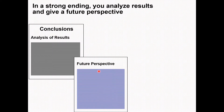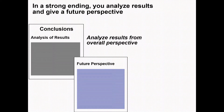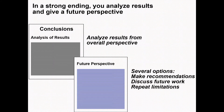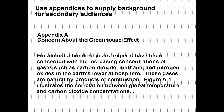A good research article always has strong conclusions and a good future perspective. In the future perspective, we analyze research from an overall perspective. We have several options: we can make recommendations, discuss limitations of the work. You have done a lot of good work, you conclude from what you have found, and then you make recommendations based on the analysis of your research — suggesting changes, other parameters, and recommending future work or future discussions.